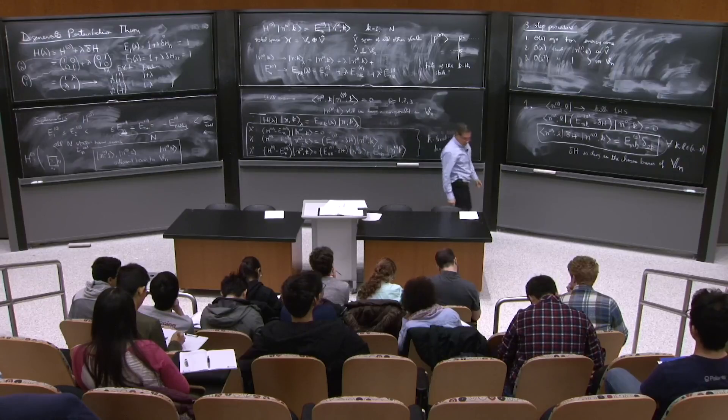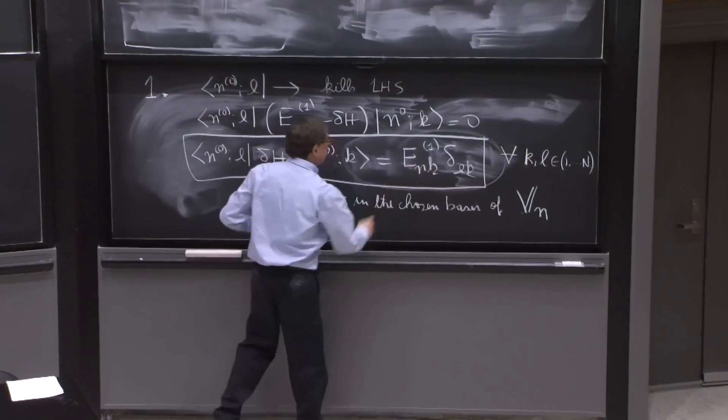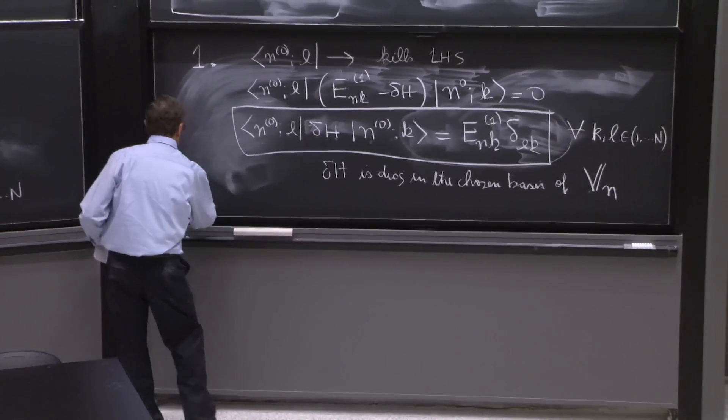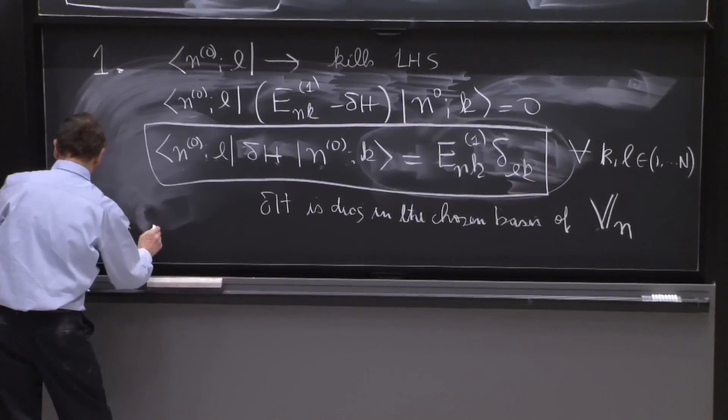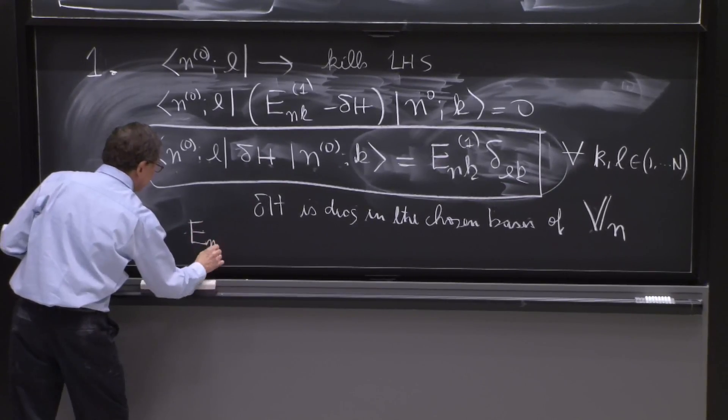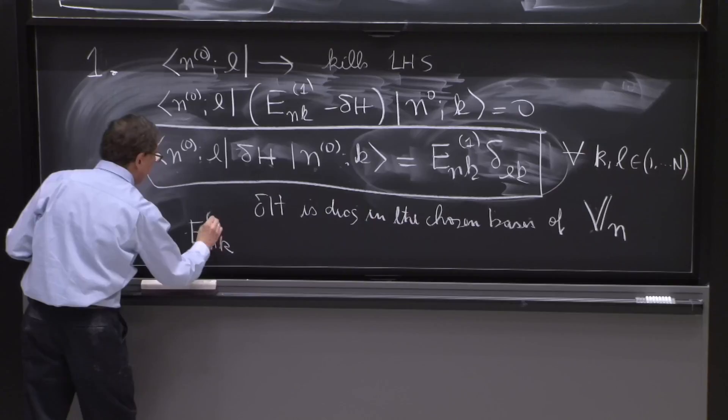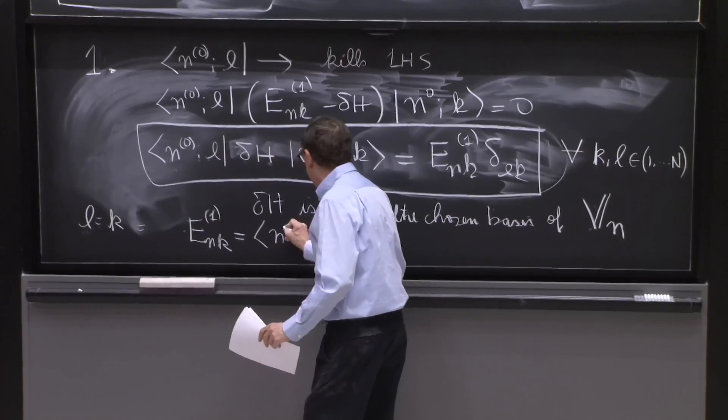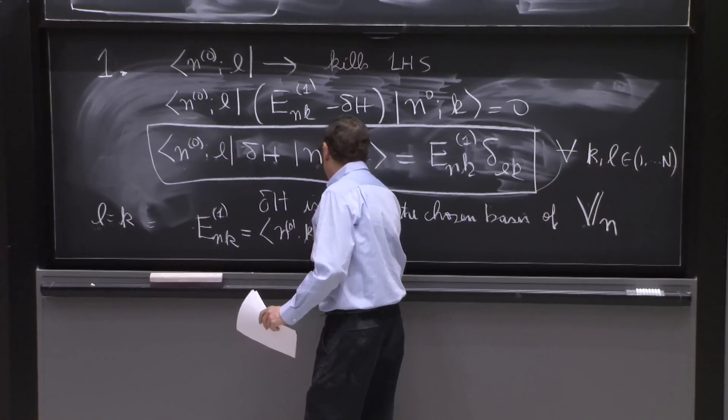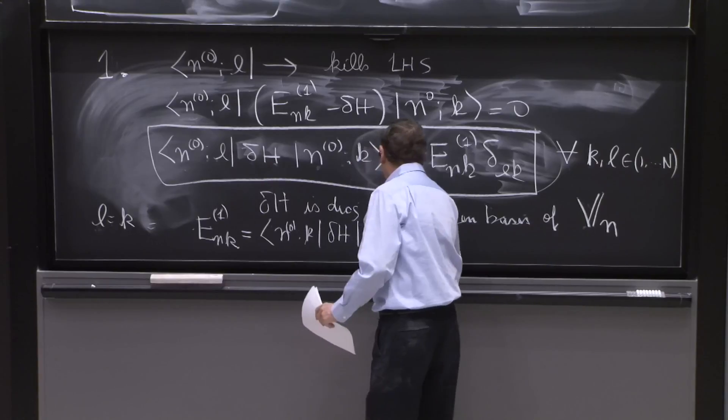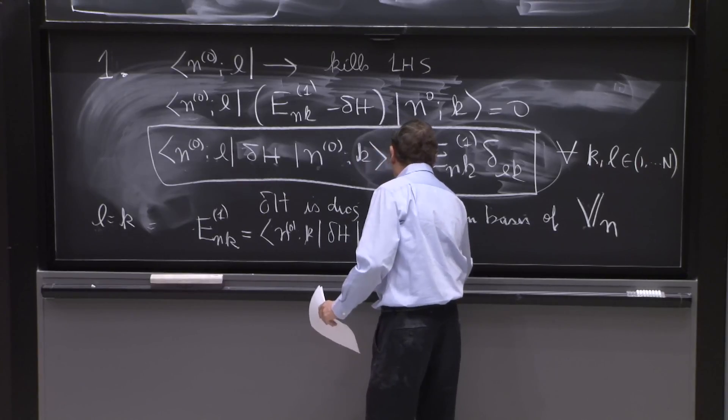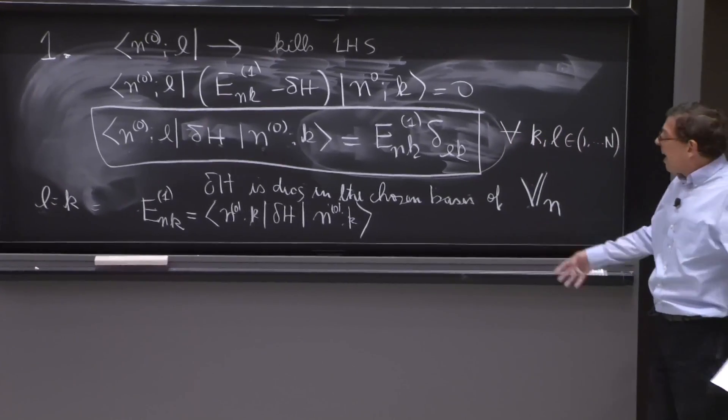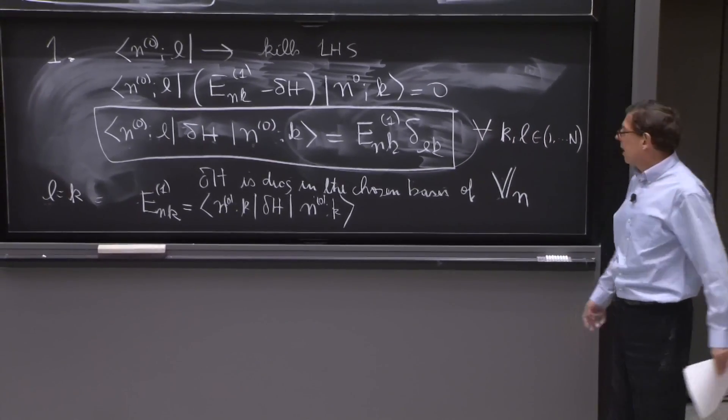once you have the matrix being diagonal, you can take l equal to k. And then, you find on the right-hand side, enk1 is equal to n0k delta H n0k.